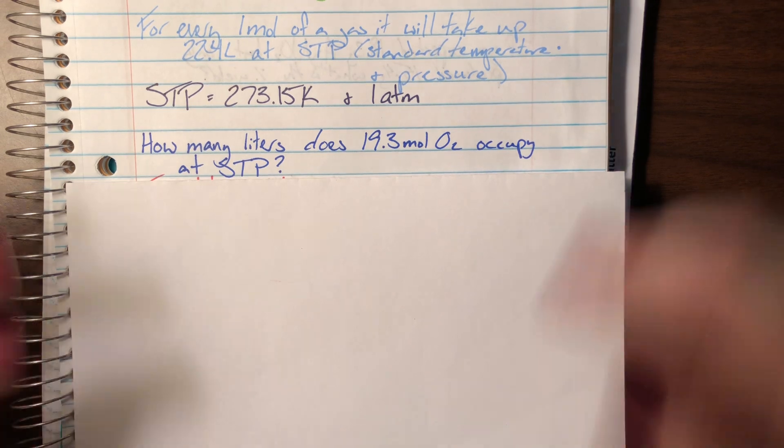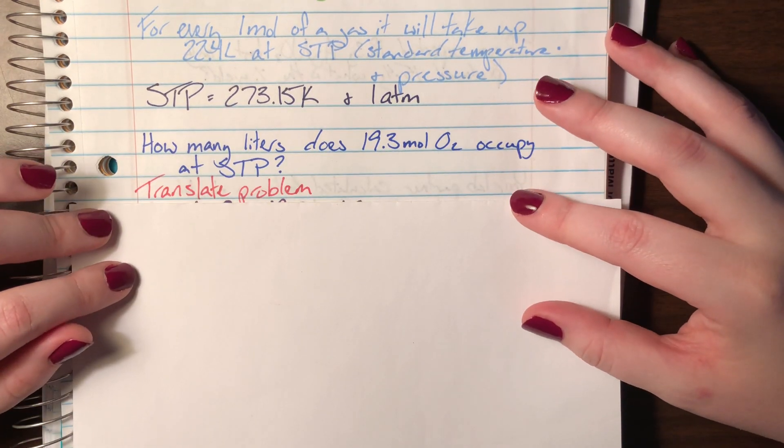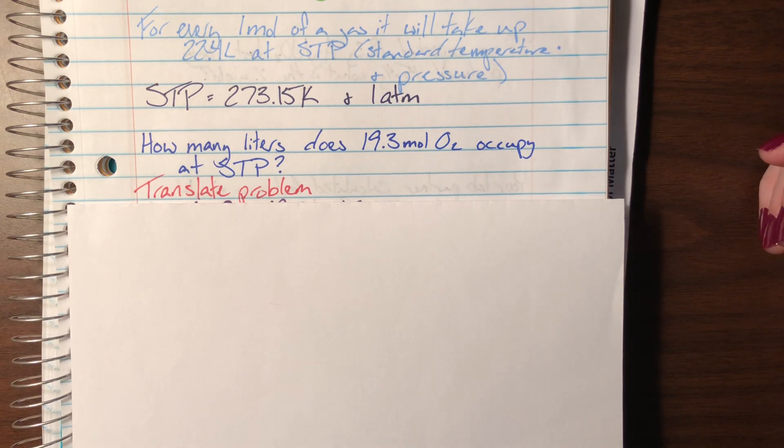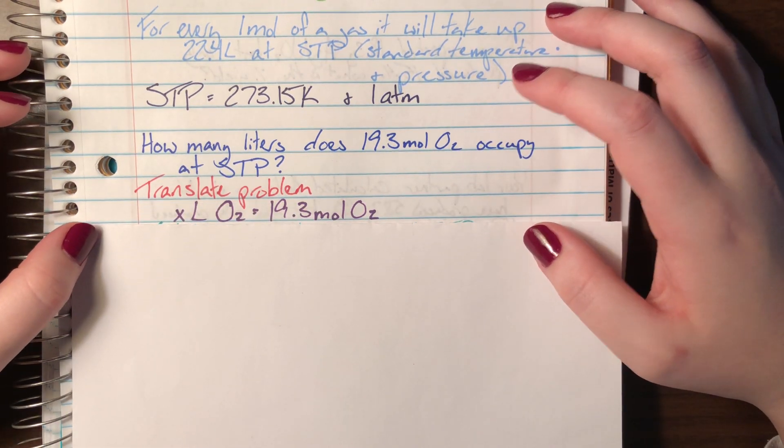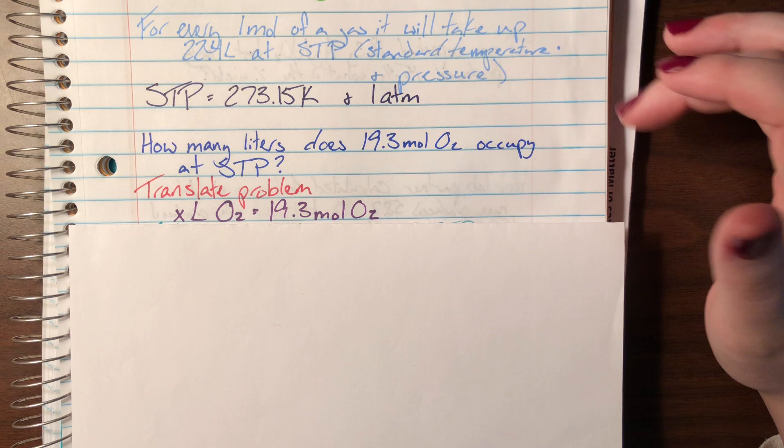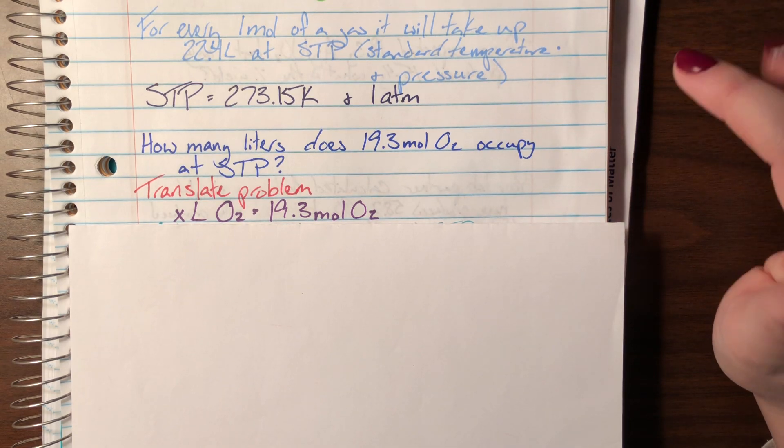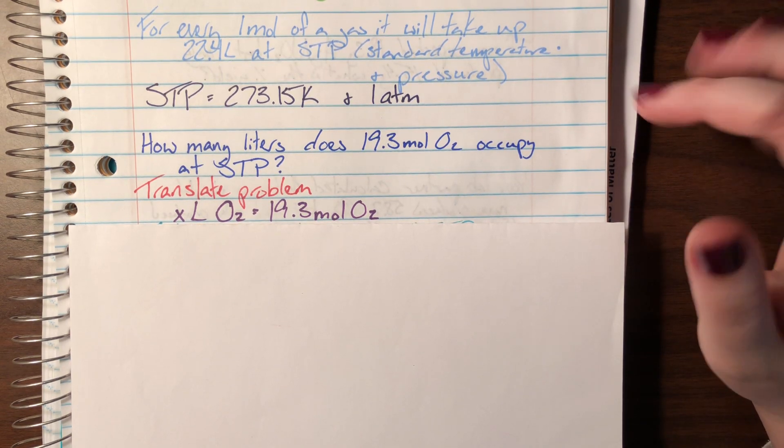I see that my question word is attached to liters and that my number given is in moles so I will write it as x liters O2 equals 19.3 moles of O2.